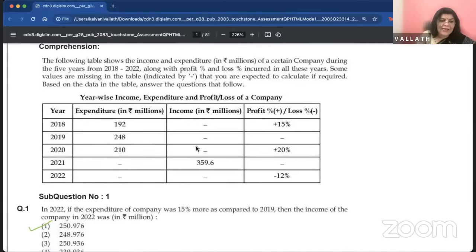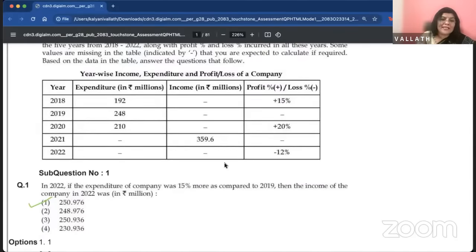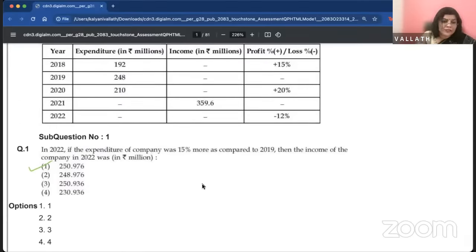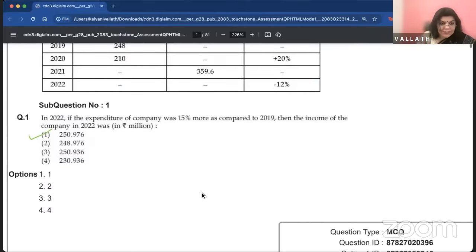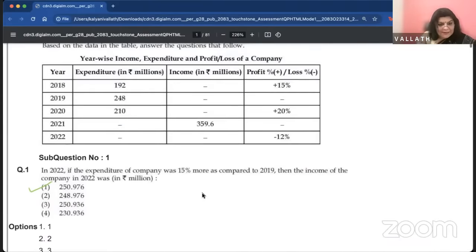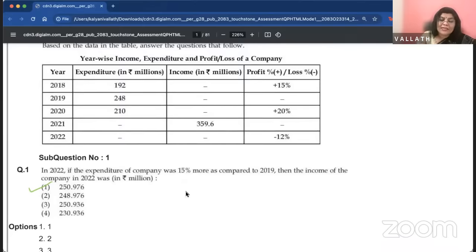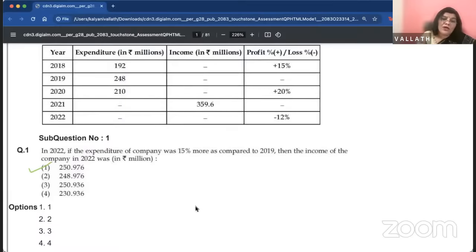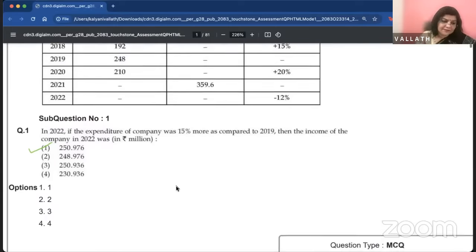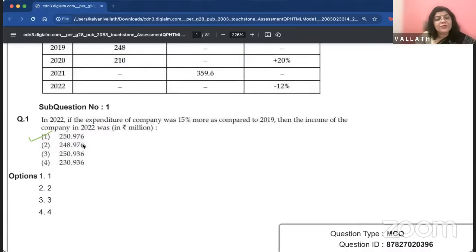Let us start with paper one. In 2022, if the expenditure of a company was 15% according to this, this data interpretation was very tricky for many people. When you write another exam, you should remember this. Don't get stressed just because the first question is difficult.